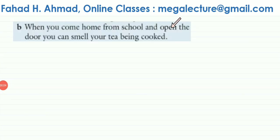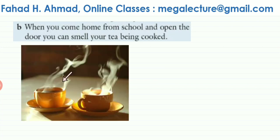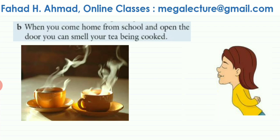Part B of the question states: when you come home from school and open the door, you can smell your tea being cooked. It is actually very easy to smell hot things — you can smell hot food from far away. If food is in the fridge it's cold and you're not capable of smelling it.